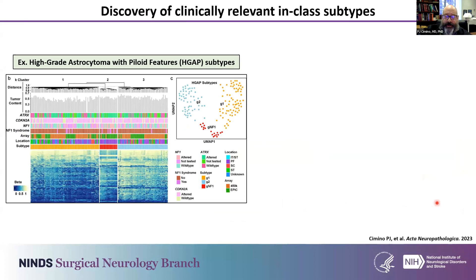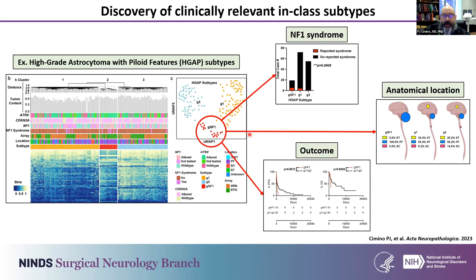Methylation is also being used to identify prognostically relevant clinical subtypes within tumor types. One example we published last year looked at the newer WHO entity high-grade astrocytoma with piloid features, so-called HGAP, where we identified three subtypes. Within them, a small subset is associated with NF1 syndrome, appears localized entirely to the posterior fossa, and has a worse clinical outcome compared to the other types. Discovery of subtypes within tumor types has been one of the driving forces for classification going forward with the next iterations of the WHO.